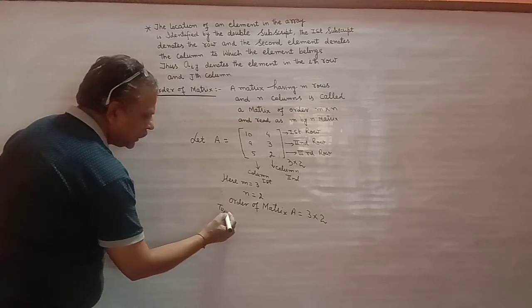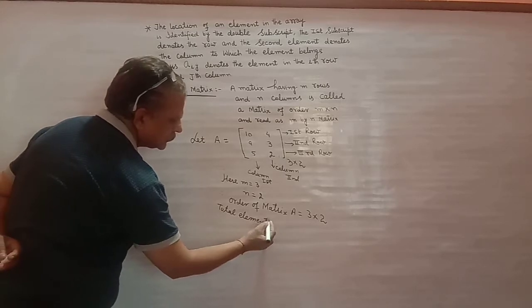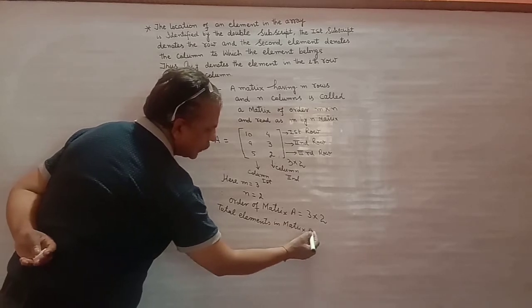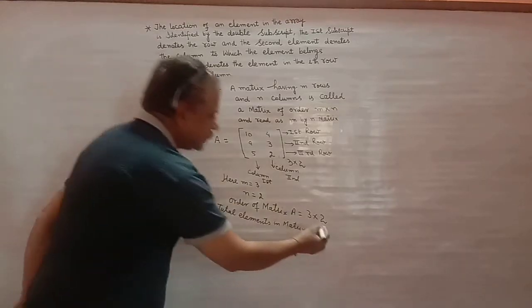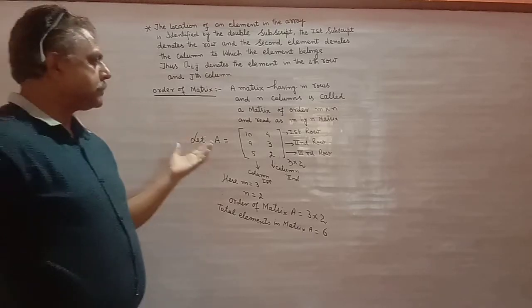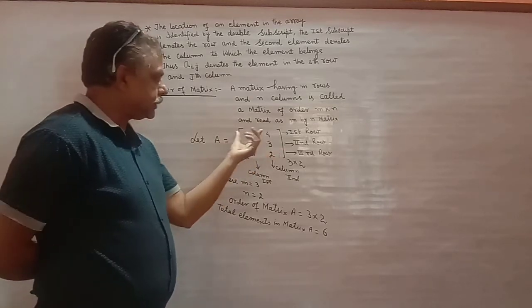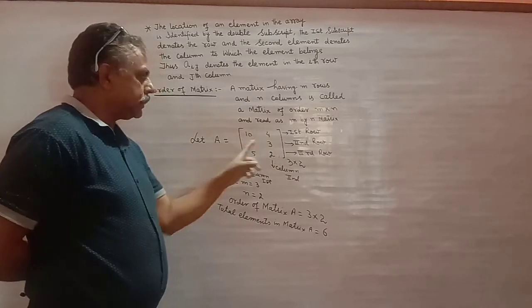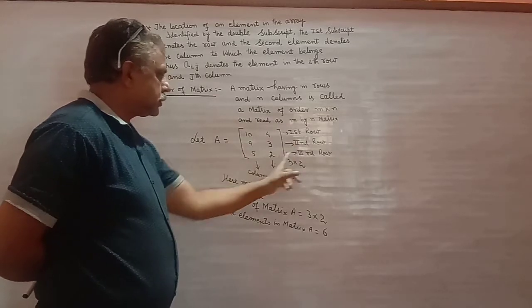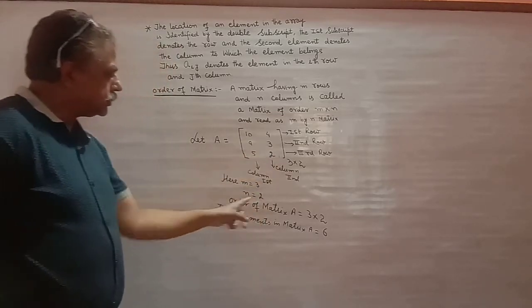तो total elements in matrix A equal to कितना हो गया? 3 × 2 = 6. तो इससे हमें यह मिल गया कि matrix में चीजों को कैसे लिखते हैं, और उसकी entries को कैसे बताते हैं। यहां M=3, N=2, column=2, तो order 3×2 और total elements 6.